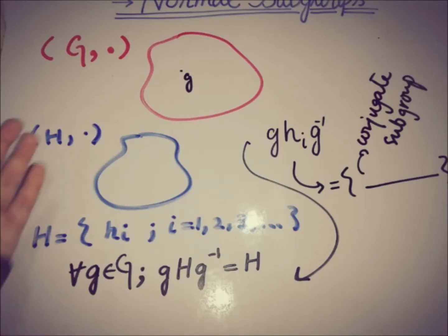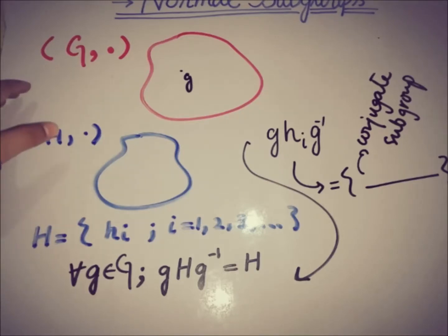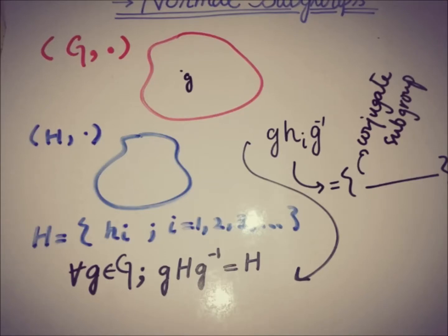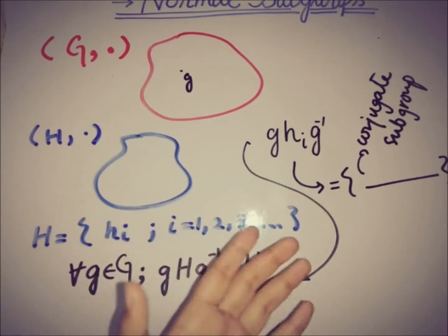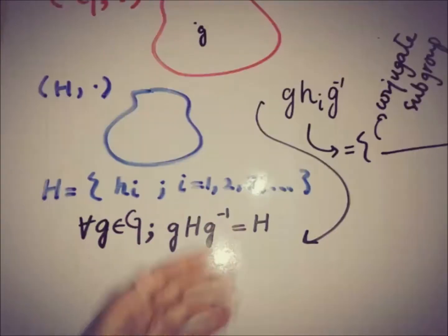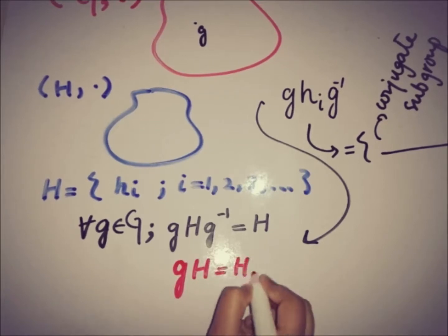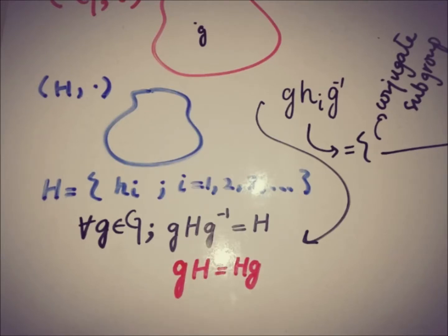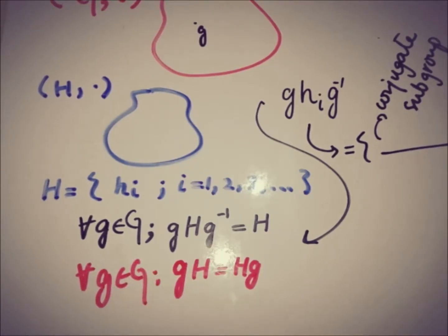Now, what is the definition of a normal subgroup? If we have a group G and a subgroup H, then H is said to be a normal subgroup — also known as self-conjugate subgroup — if it coincides with its conjugate subgroup for every element of G. That is, gHg-inverse equals H for all g in G, meaning left coset equals right coset. This is the definition of the normal subgroup.